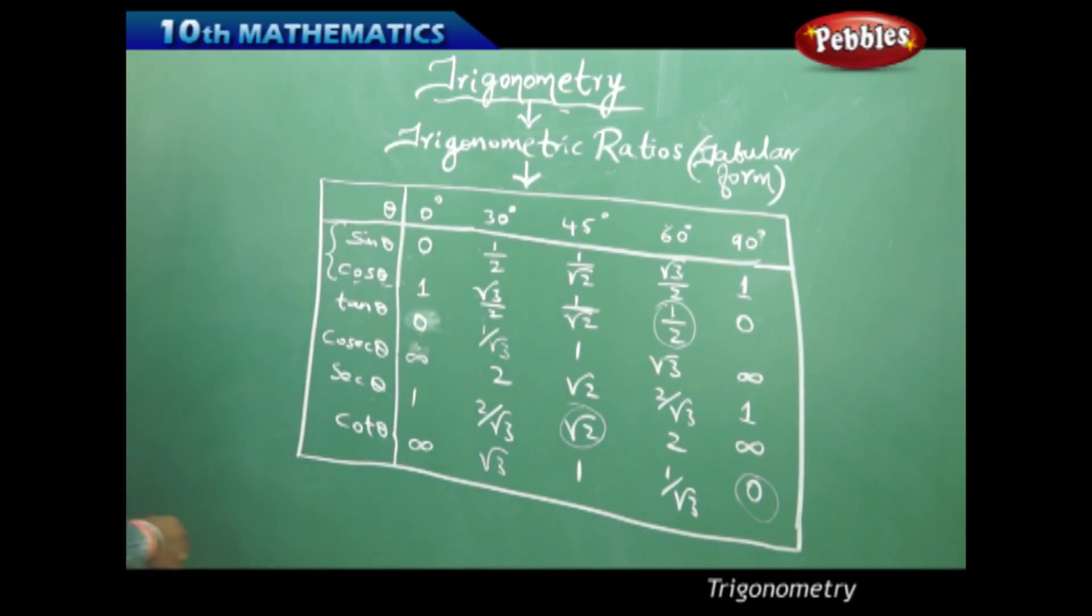Therefore the learning outcome from sine and cos is that as theta increases, sine theta increases equally. And similarly when I investigate for cos, as theta increases, cos theta decreases.